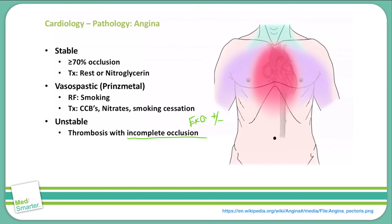The clinical correlation with unstable angina is an increase in the frequency and/or the intensity of the chest pain. This means you can have chest pain at rest, but sometimes it takes a lot of exertion before we get the chest pain. You do not have any cardiac biomarkers elevated with unstable angina — this distinguishes unstable angina from an NSTEMI, which we will discuss later.